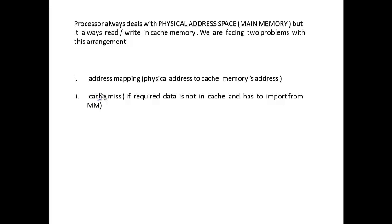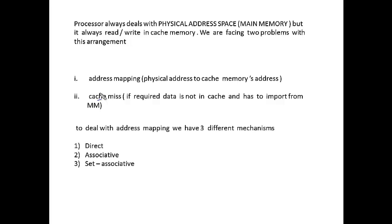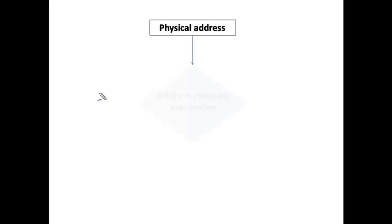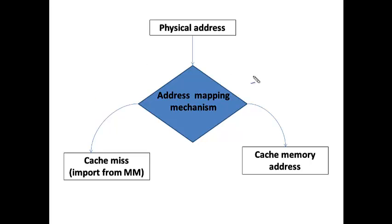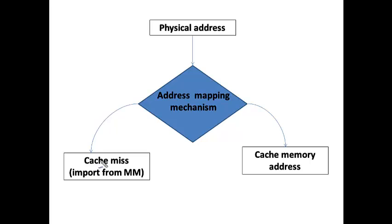To deal with address mapping, we have three solutions: direct mapping, associative mapping, and set-associative mapping. The physical address is sent through the address mapping mechanism, which gives two results: if it succeeds, it generates the cache memory address of the required data item. If the data item is not present in cache memory, that results in a cache miss, and the data must be imported from main memory.